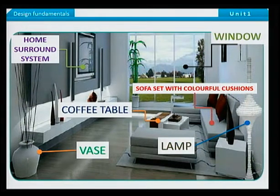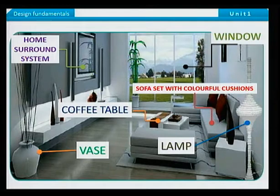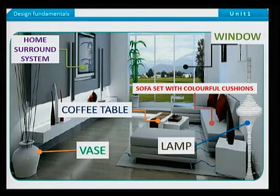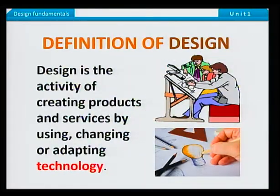What can you say about the setting? You will agree with me that the room is very nice. We have just seen a variety of products that have been designed. We can also see a harmony in colors of this living room. The living room has been well designed. So this is what design is all about. Design is the activity of creating products and services by using, changing or adapting technology.